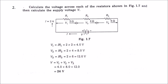Problem two: calculate the voltage across each resistor shown in figure 1.7, then calculate the supply voltage. The circuit has three resistors connected in series: R1 is 2 ohms, R2 is 4 ohms, and R3 is 6 ohms. We need to calculate V1, V2, and V3. The current and resistance values are given, and we use the relation V = IR.